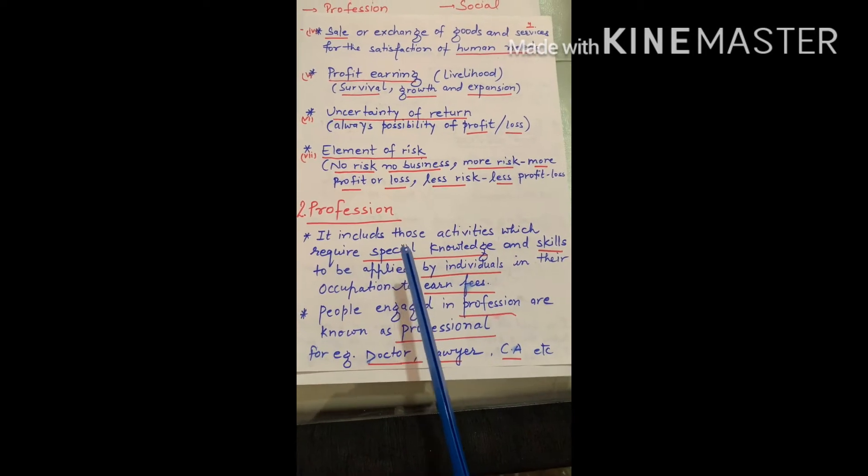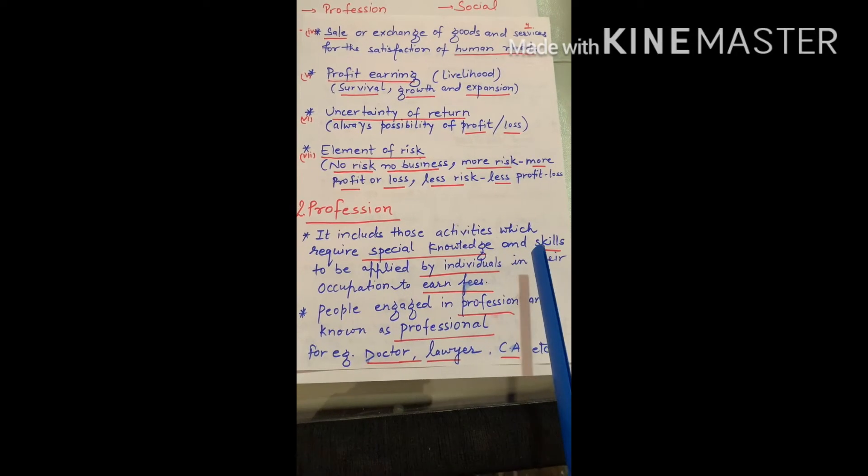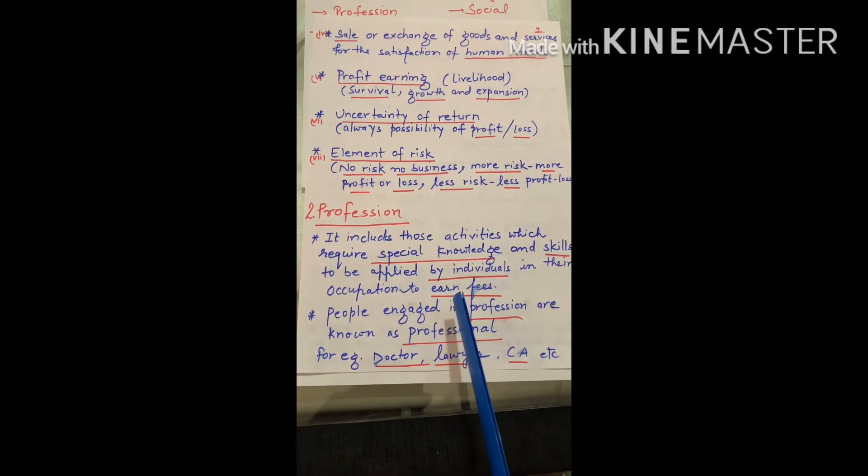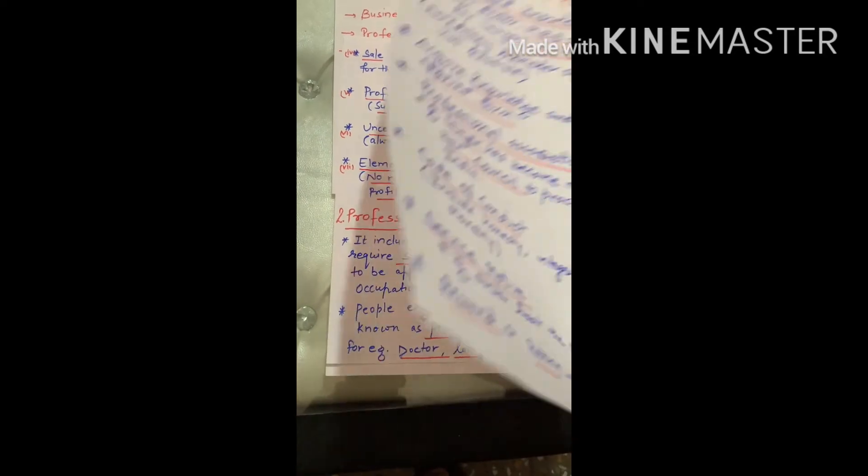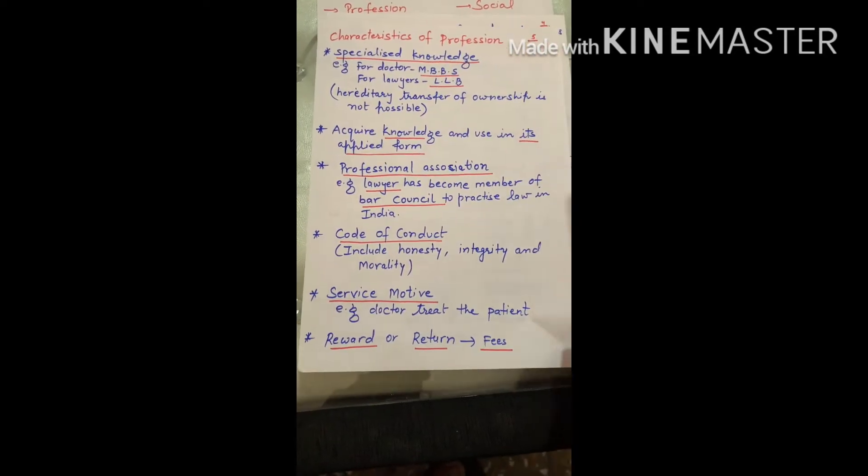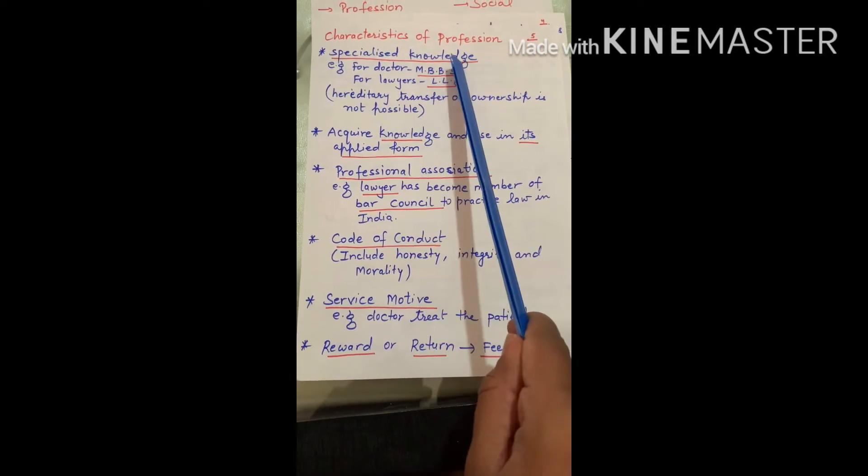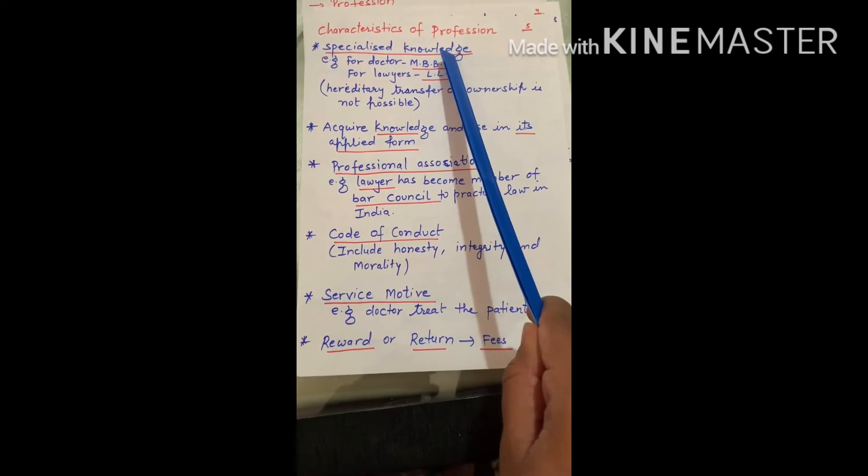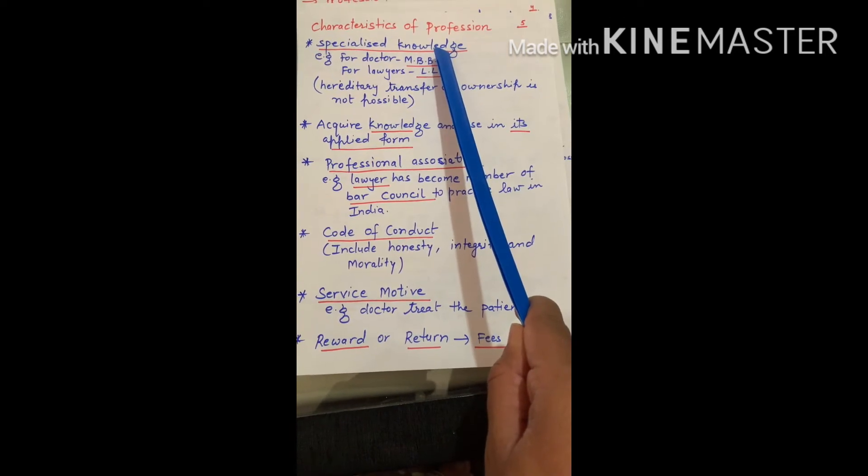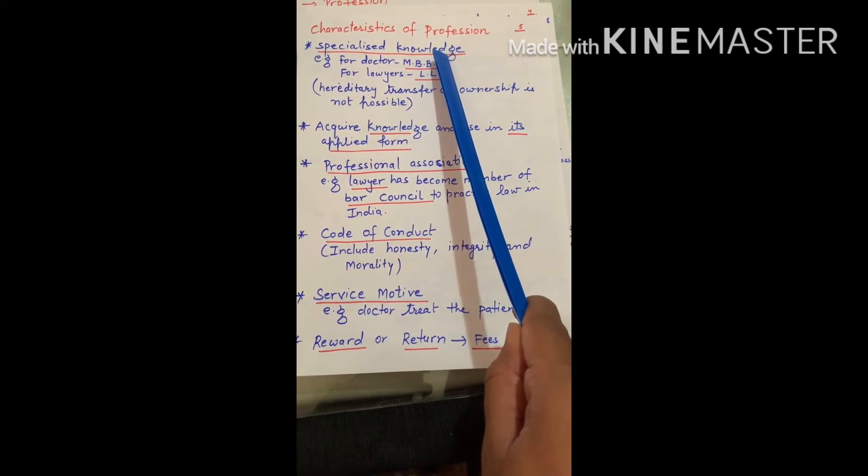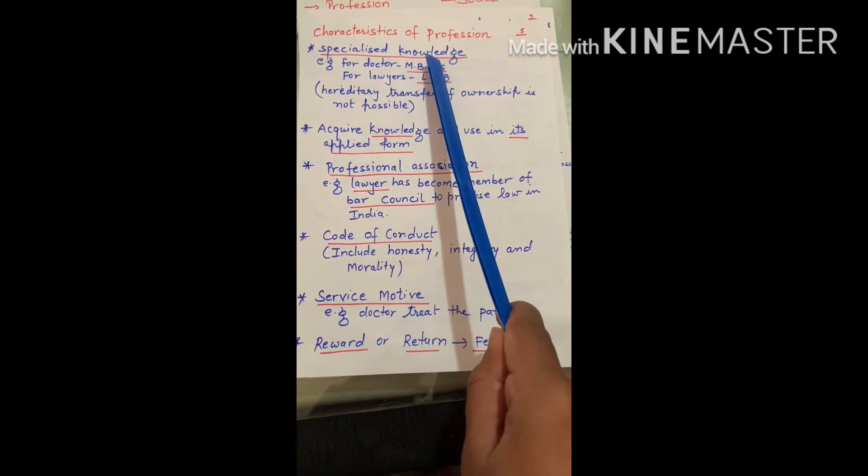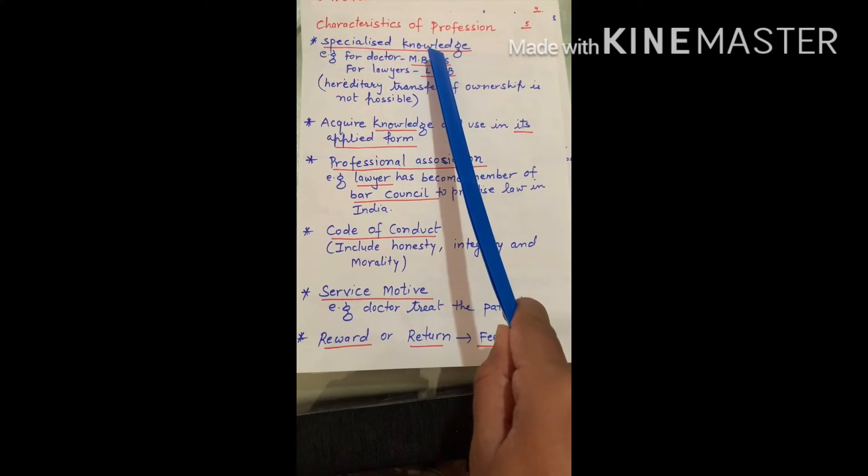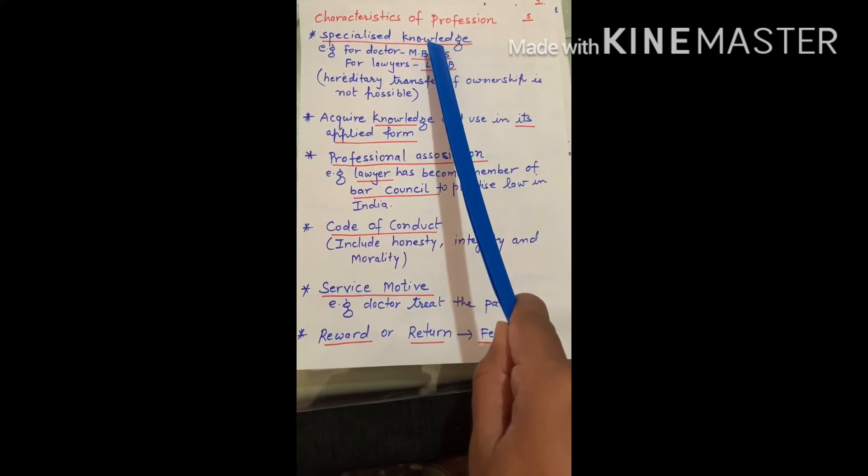In the profession, we require special knowledge and skills. And we earn fees. Now we will discuss about characteristics of profession. First is specialized knowledge. If we want to join any profession, whether we want to become doctor, CA, lawyer, then we must take special knowledge. And this special knowledge we will be able to get to work.